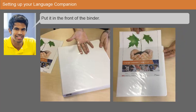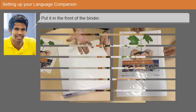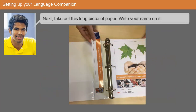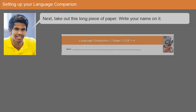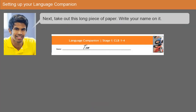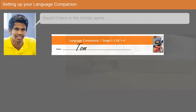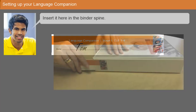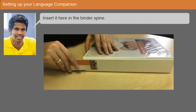Next, take out this long piece of paper, write your name on it, and insert it here in the binder spine.